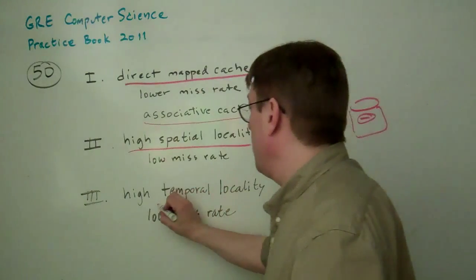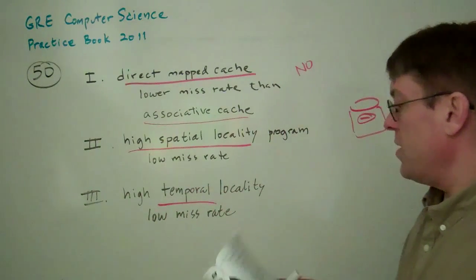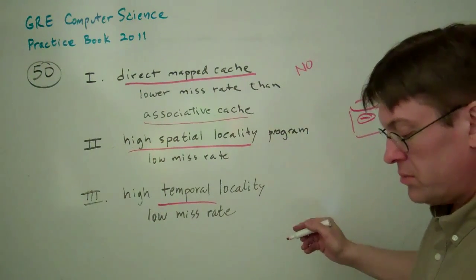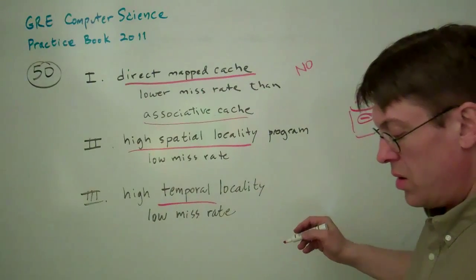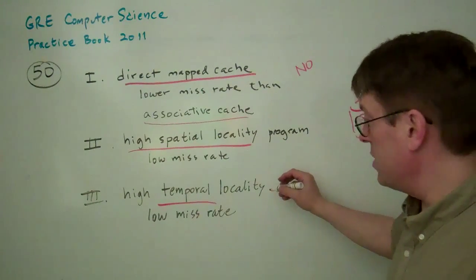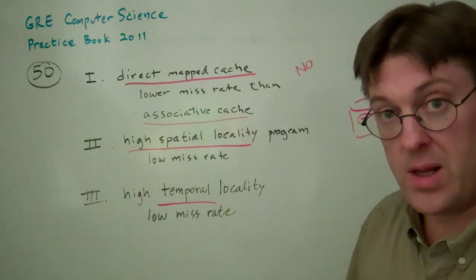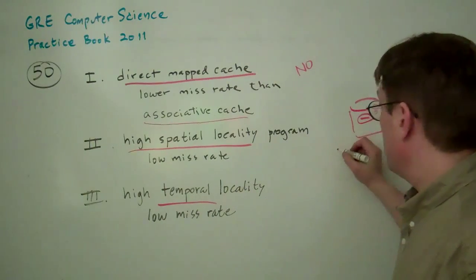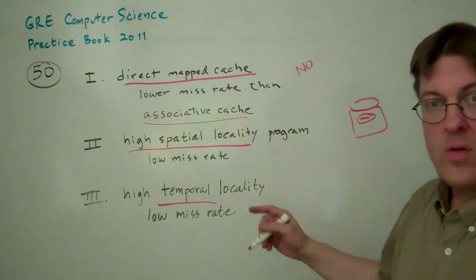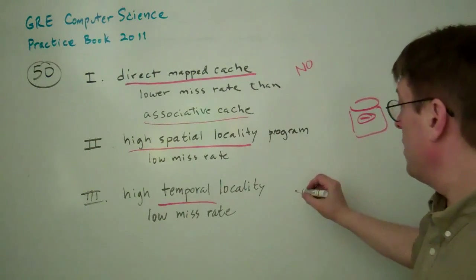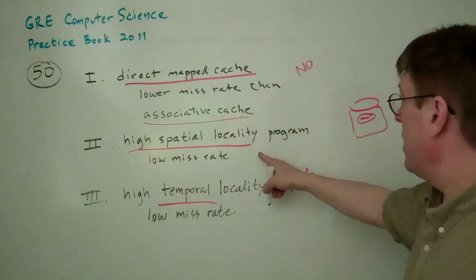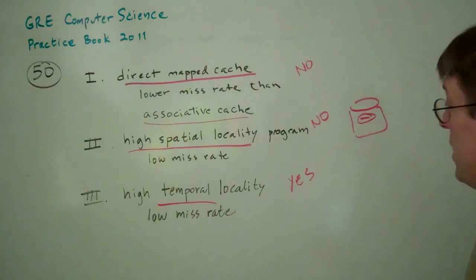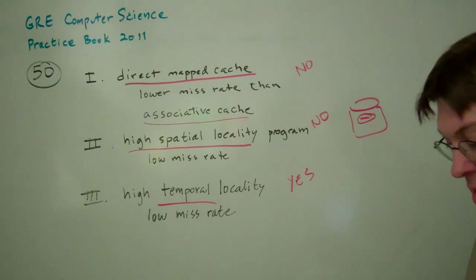Temporal locality is the important one. So yeah, this one is, if you used the data recently, then the cache would tend to save it. You'd have a lower miss rate because the data that you used recently is still in the cache. So this is a yes. This is true. And high spatial locality, that is not true. So my answer would be 3 only, which is C.